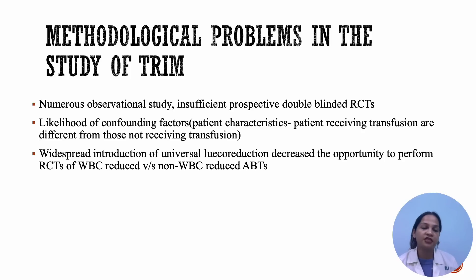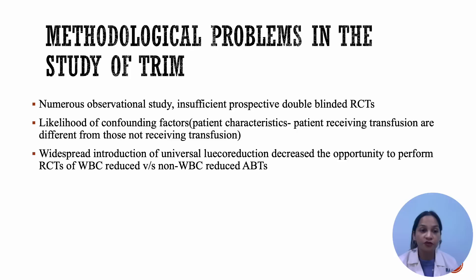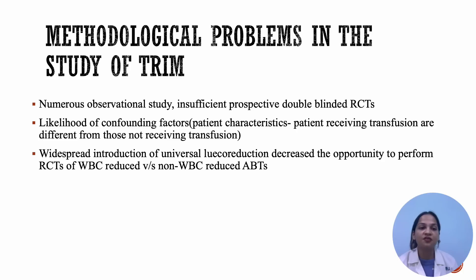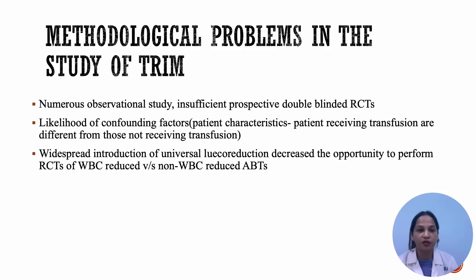The methodological problems we face during the study of TRIM are: most of the studies are observational; there is insufficiency of prospective double-blinded RCTs; and when studying TRIM, we should consider confounding factors like patient characteristics, donor unit characteristics, or modifiers that might be present in the donor unit. Especially in Western countries, there is widespread introduction of universal leukoreduction, which decreases the opportunity to perform RCTs of WBC-reduced versus non-WBC-reduced allogeneic blood transfusions.